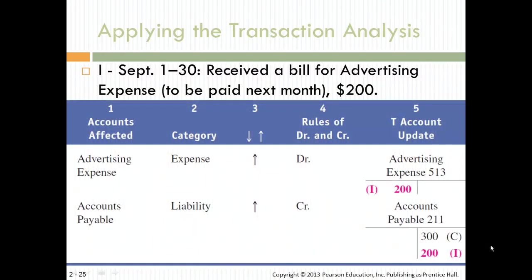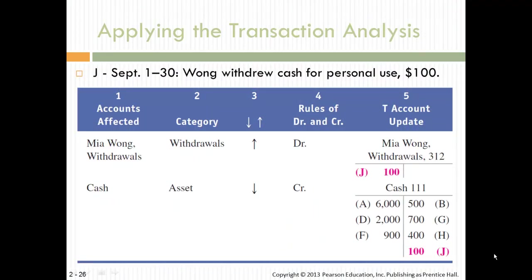An advertising bill for $200 was received. Then cash was withdrawn for personal use, so cash went down and the withdrawal account — which has a normal debit balance — increased. You know that a withdrawal brings equity down.